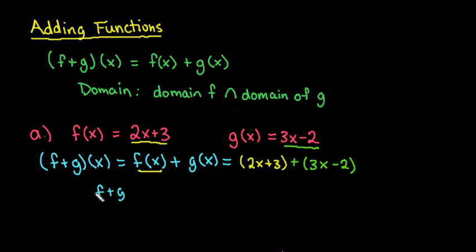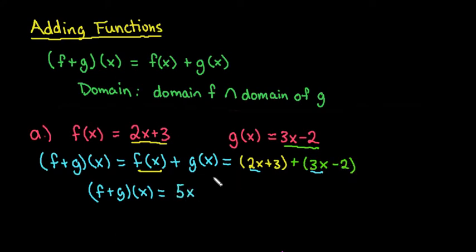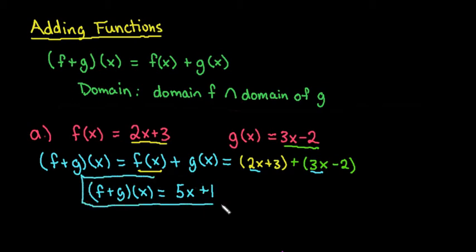So f plus g of x is going to equal: 2x plus 3x gives me 5x, and 3 minus 2 gives me 1. So f plus g of x equals 5x plus 1. This is our final answer — we can't find a numeric value because this is just a function giving us an equation to find other values.